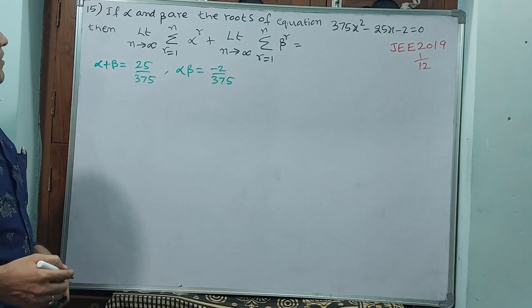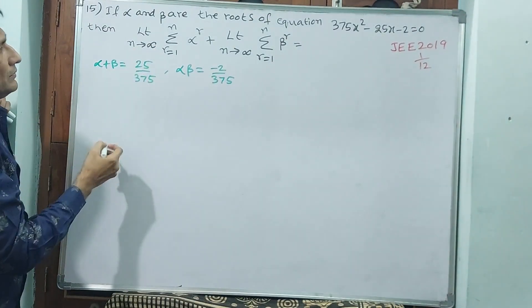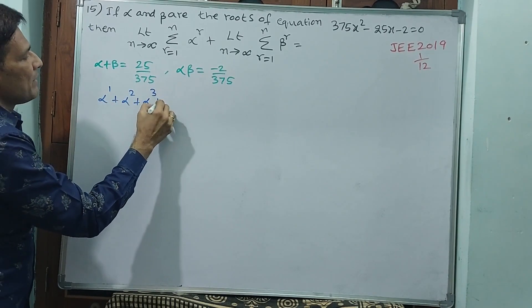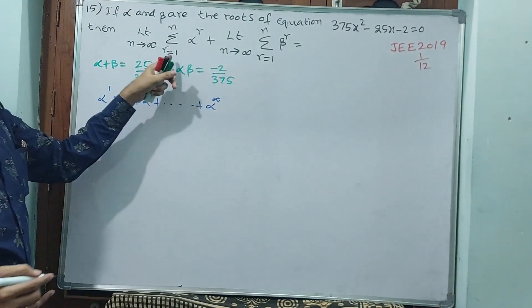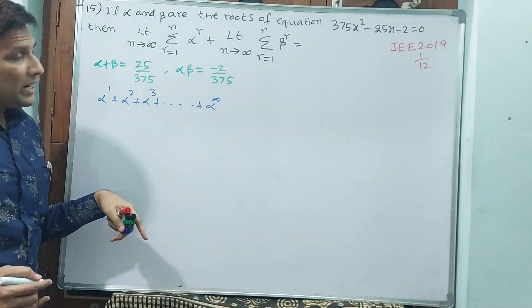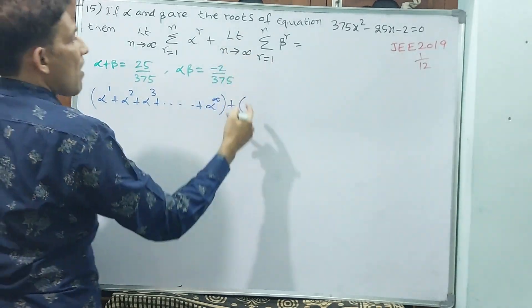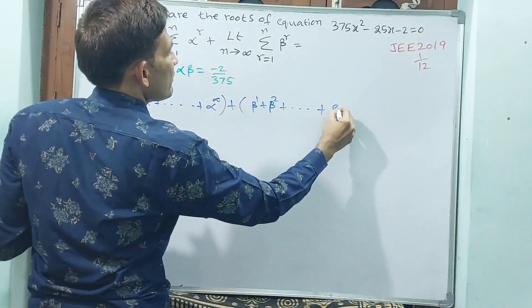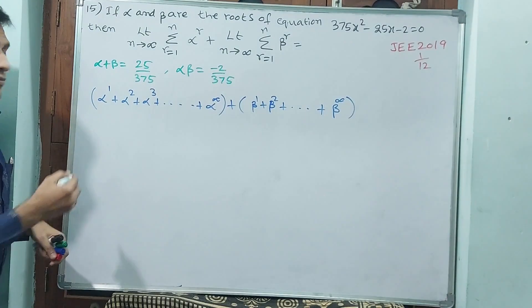Now, this series can be written as: alpha to the power 1, plus alpha to the power 2, plus alpha to the power 3, and so on, up to alpha to the power of infinity — because r goes from 1 to infinity. That is one series, plus another series: beta to the power 1, plus beta to the power 2, and so on up to beta to the power of infinity. So we use the infinite series formula.